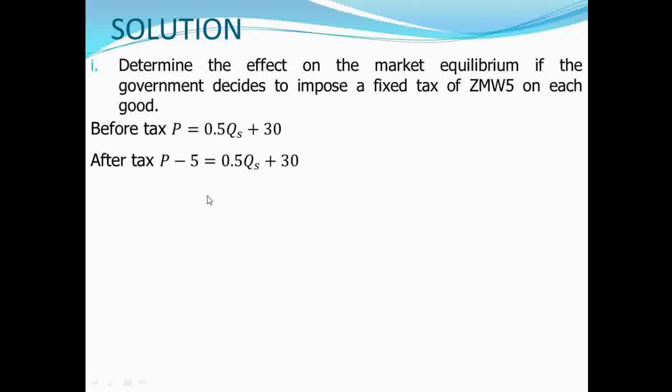We are seeing that the price that the buyers are paying is not equal to the price that sellers are keeping, because they have to remove 5 and pay it to the government as taxation for a unit sold. When the function is presented such that quantity supplied is a function of price, please make sure you make P the subject of the formula. We are subtracting 5 from the price and keeping the right-hand side constant.